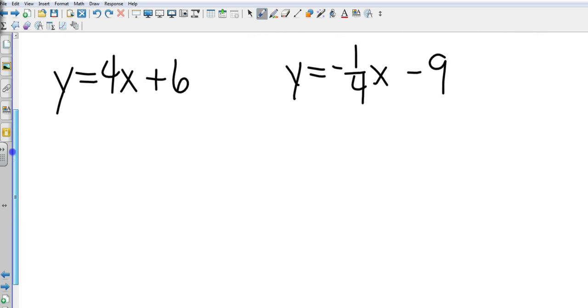So if I had Y equals 4X plus 6, and then Y equals negative 1 fourth X minus 9. I use my Y equals MX plus B. And so my M in this case is 4. And then my M in this case is negative 1 fourth.